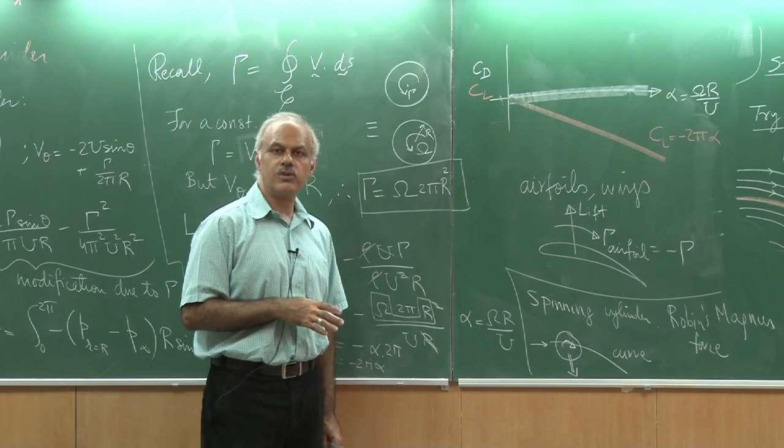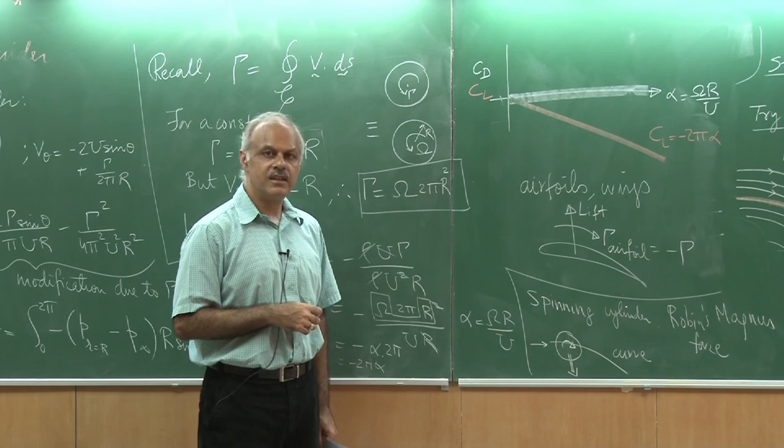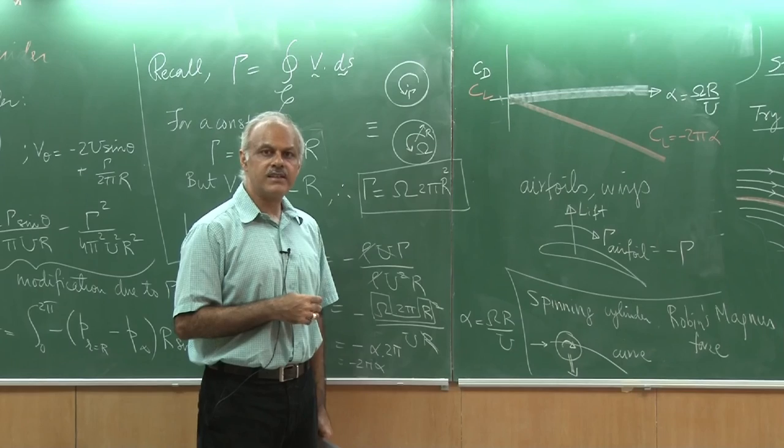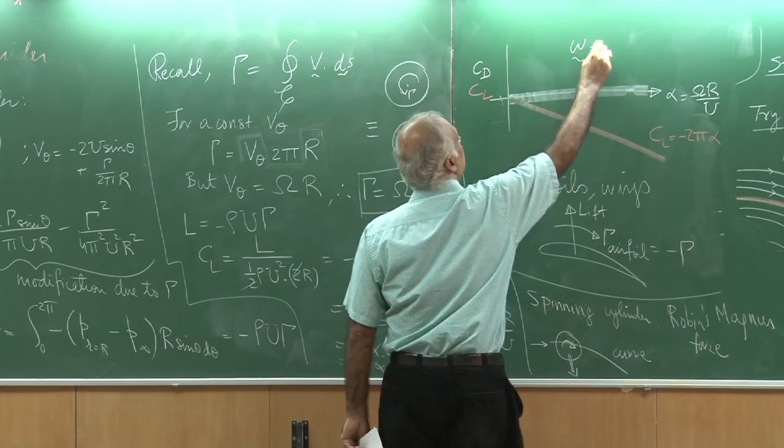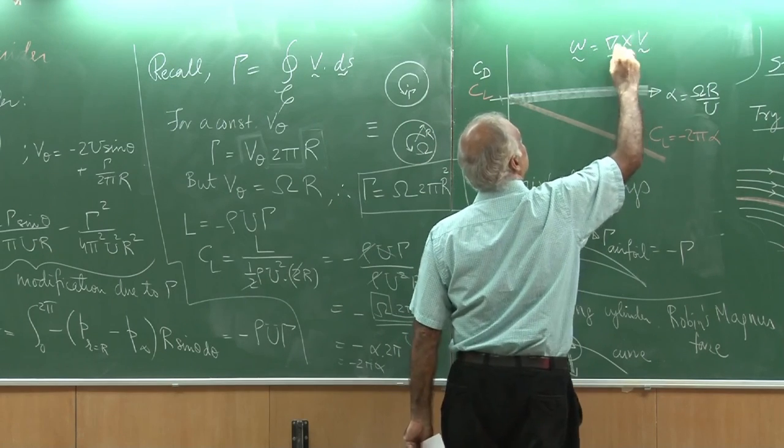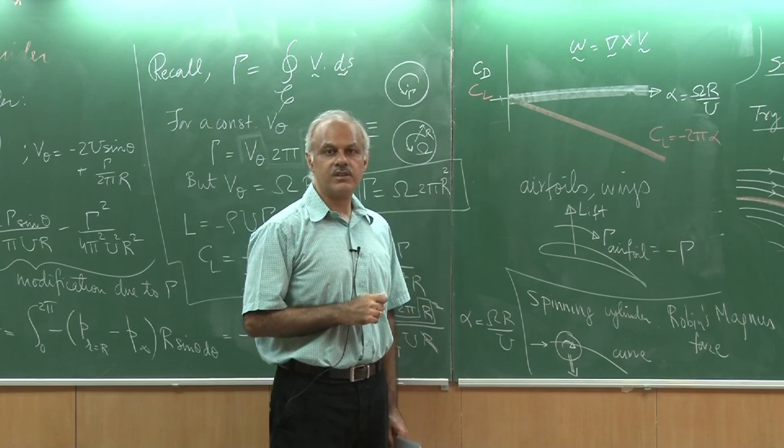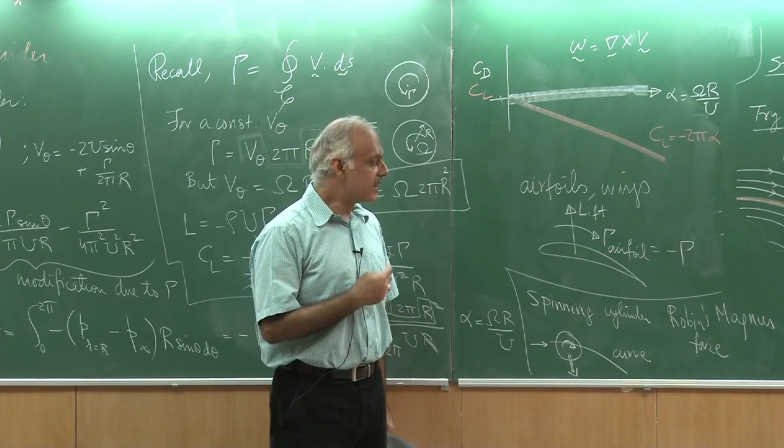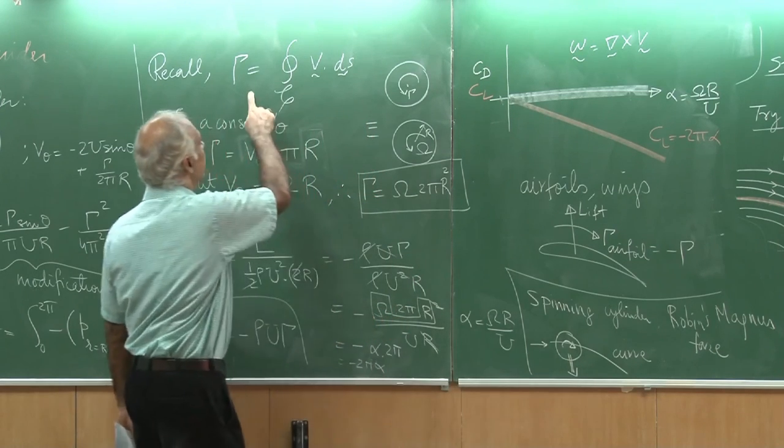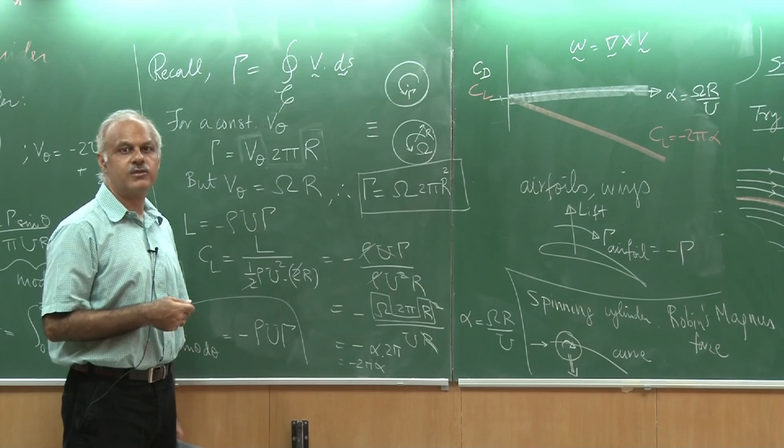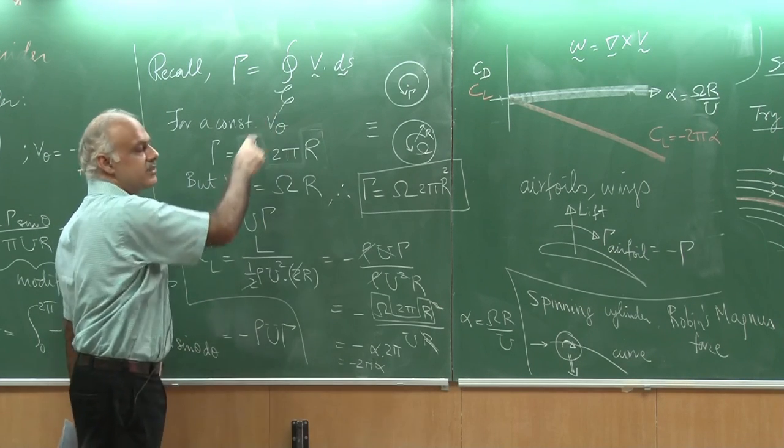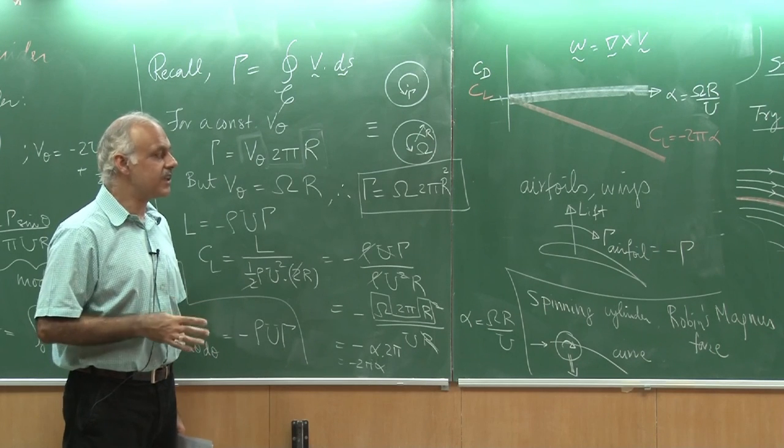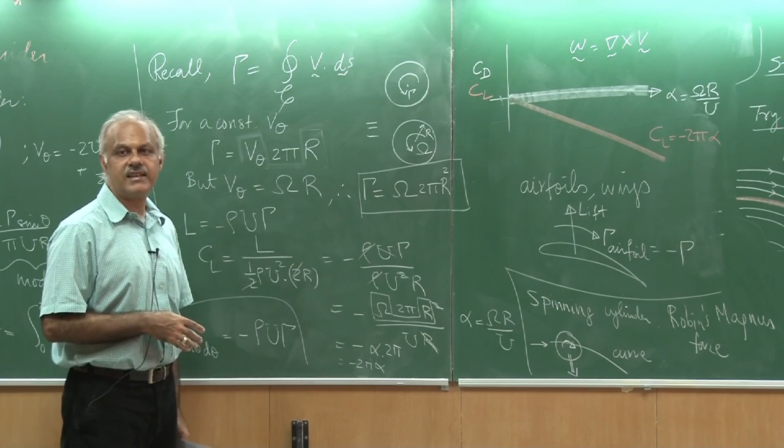One last thing before we go to a set of slides. I want to remind you that in this entire flow, the potential flow, if I asked you what is the vorticity ω, which is the curl of the velocity. Because this is the potential flow, the vorticity is 0 everywhere. It is an irrotational flow. It is just 0 everywhere. How then does it generate a circulation? Well, because it has a singularity at r equal to 0. If I took a curve that does not enclose the center, then I would get a 0 circulation around it. This is still an irrotational flow, but it bounds a singularity at r equal to 0.